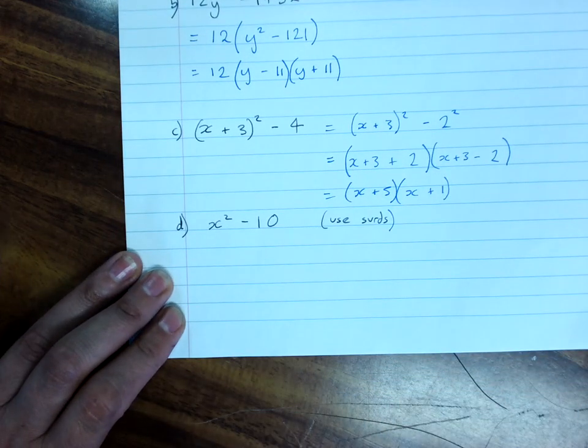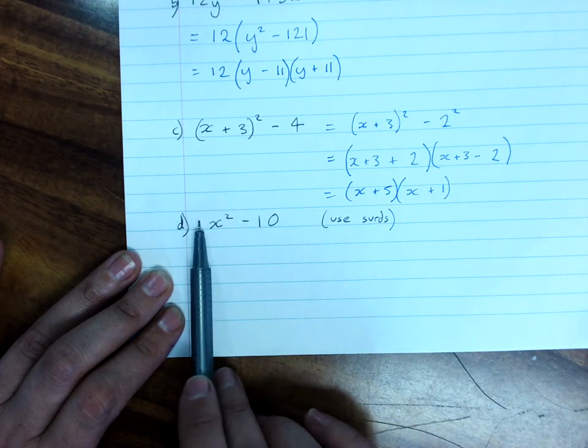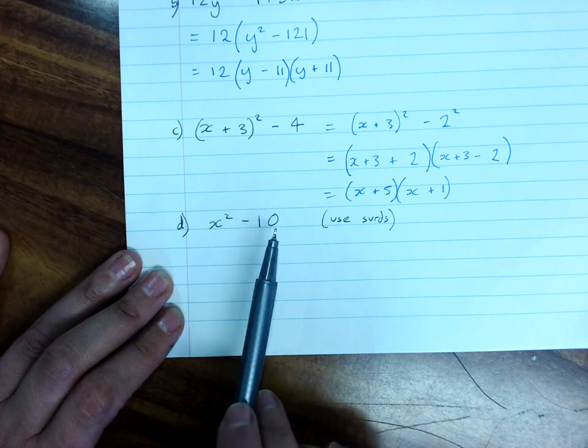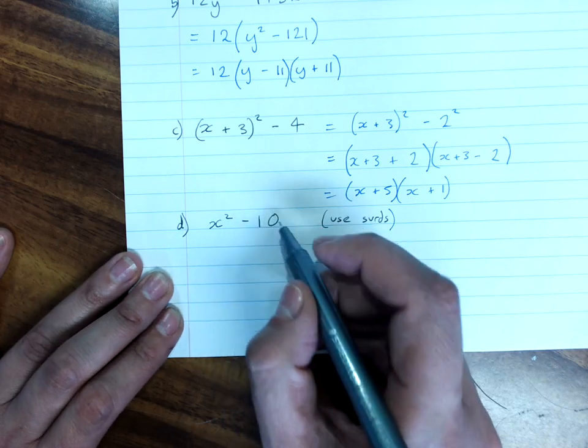We can be asked to factorize difference of perfect squares using surds. This is a square. This is not obviously a square. But, if I wrote this as